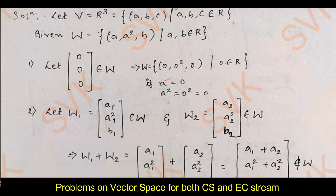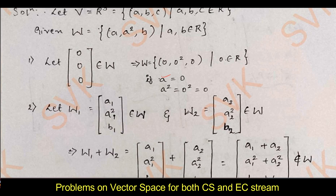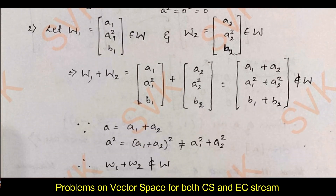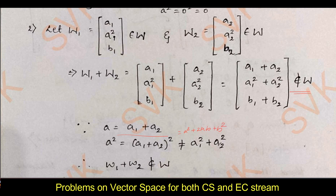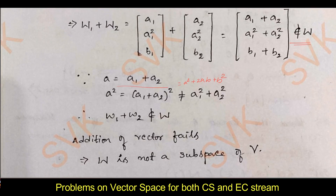Moving on to the second condition: consider w₁ = (a₁, a₁², b₁) and w₂ = (a₂, a₂², b₂), both belonging to W. Then w₁ + w₂ = (a₁+a₂, a₁²+a₂², b₁+b₂), which does not belong to W. Here is why: if we take a = a₁+a₂, then a² = (a₁+a₂)² = a₁² + 2a₁a₂ + a₂², which is not equal to a₁² + a₂². Therefore w₁ + w₂ does not belong to W, as the addition property is not satisfied, so W is not a subspace of V.